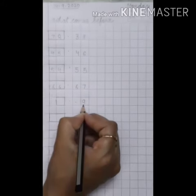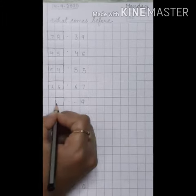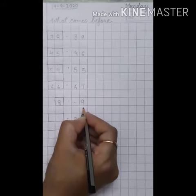Now our next number is number 9. What comes before number 9? Number 8. 8 comes before 9.